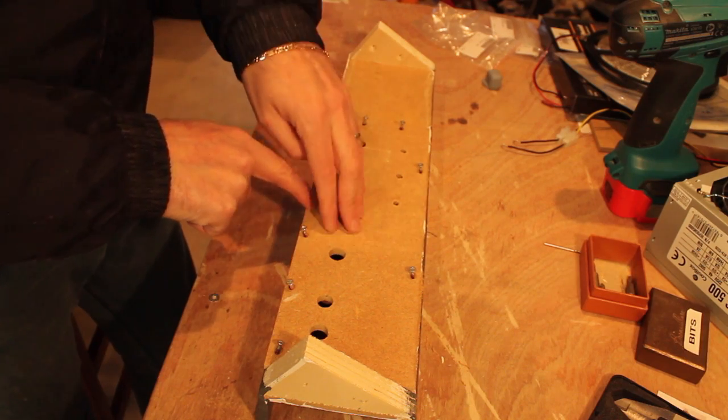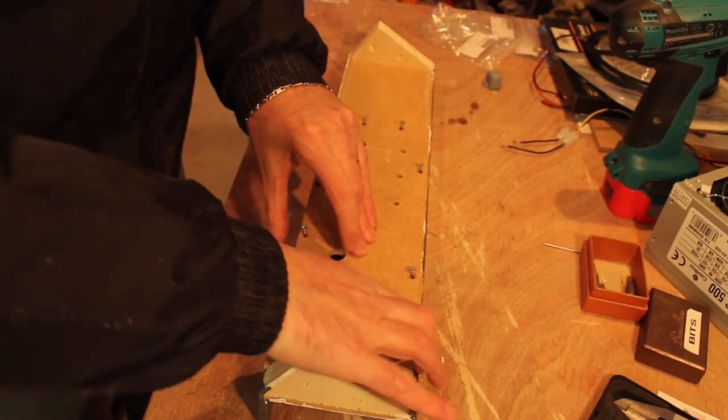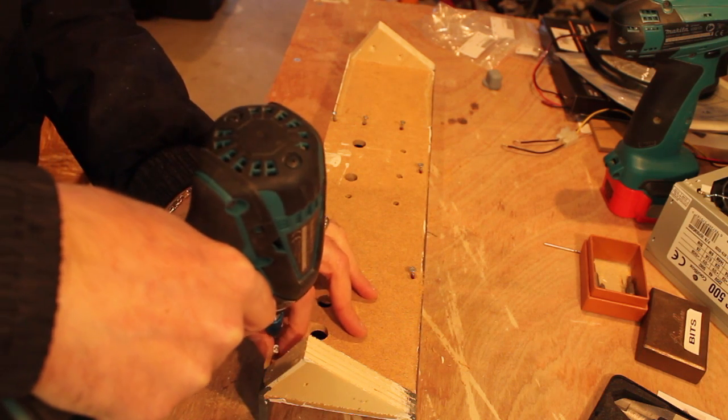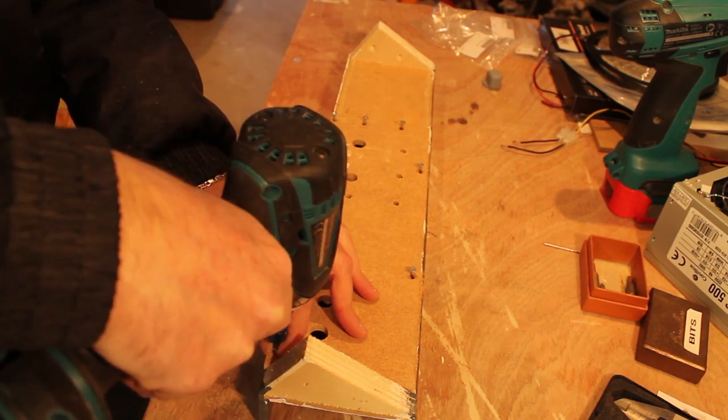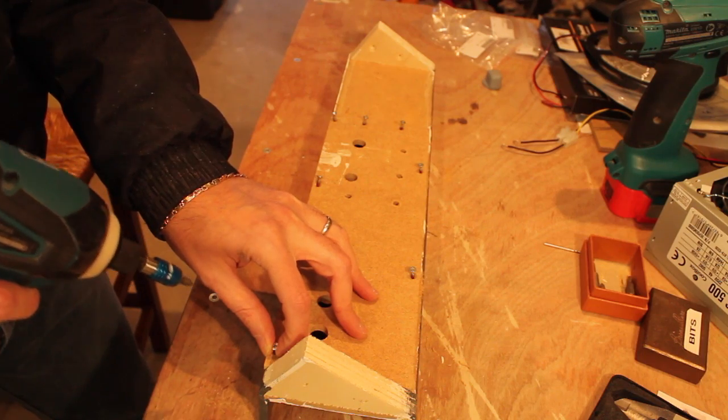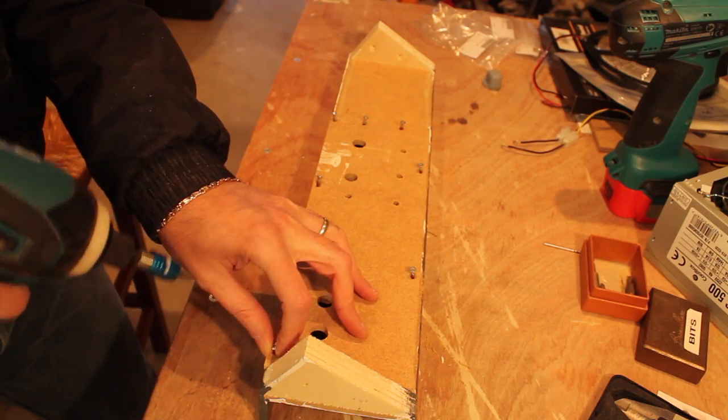I have pre-drilled a few holes and countersunk them. Now I'm going to put some small screws to attach the plate to the back of the panel. I've decided not to glue this panel just in case something goes wrong and I need to remove it.